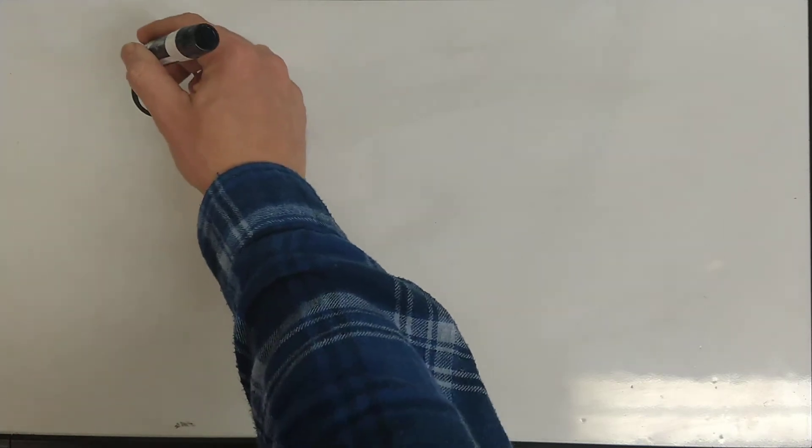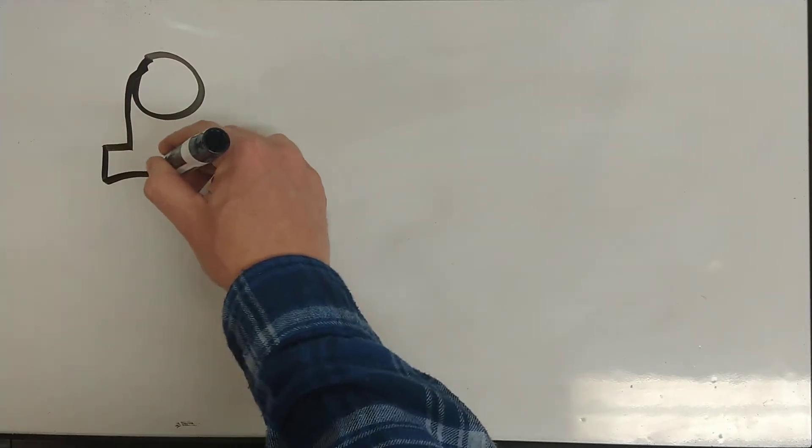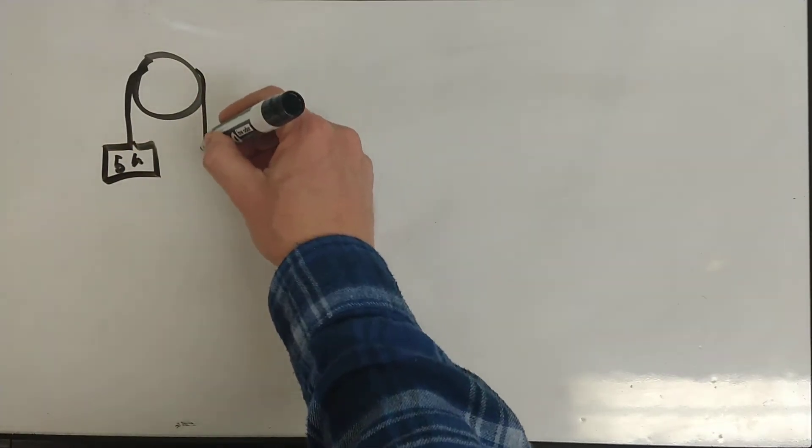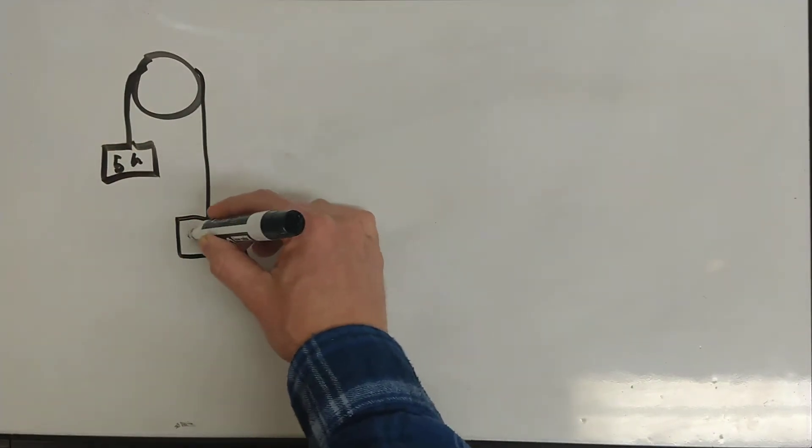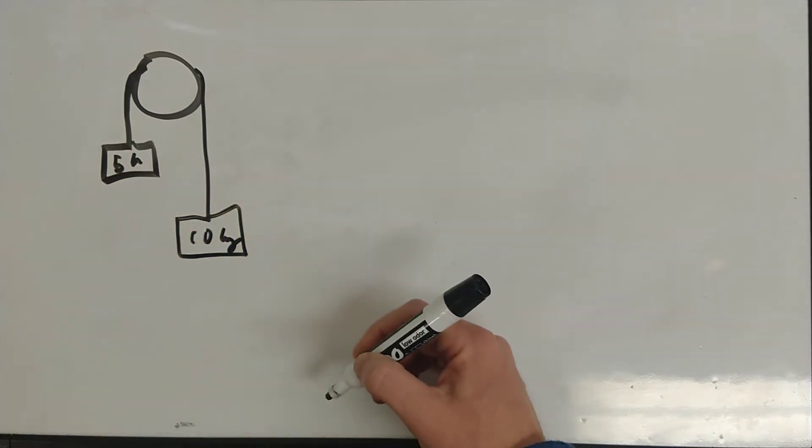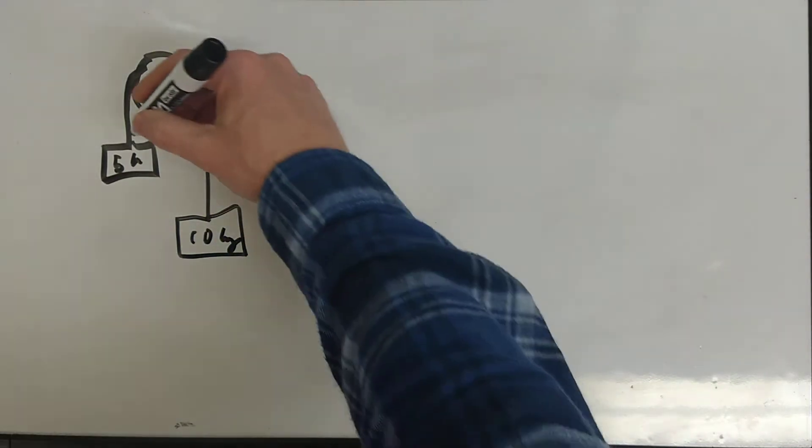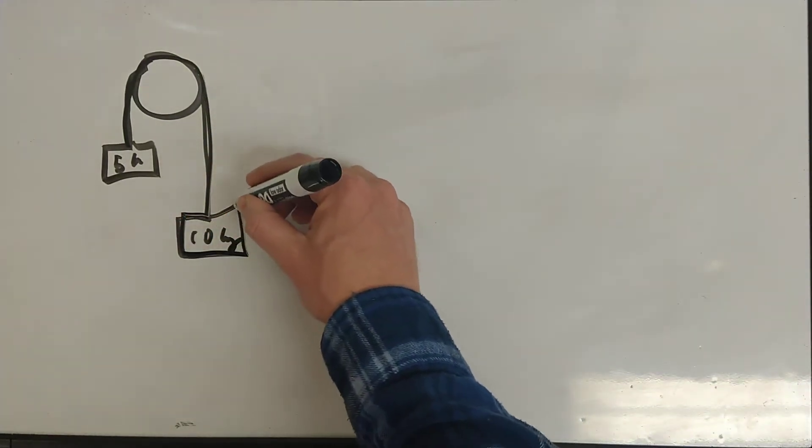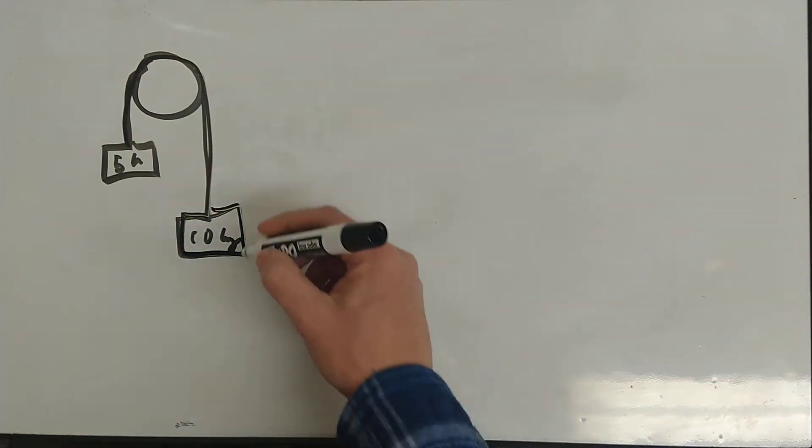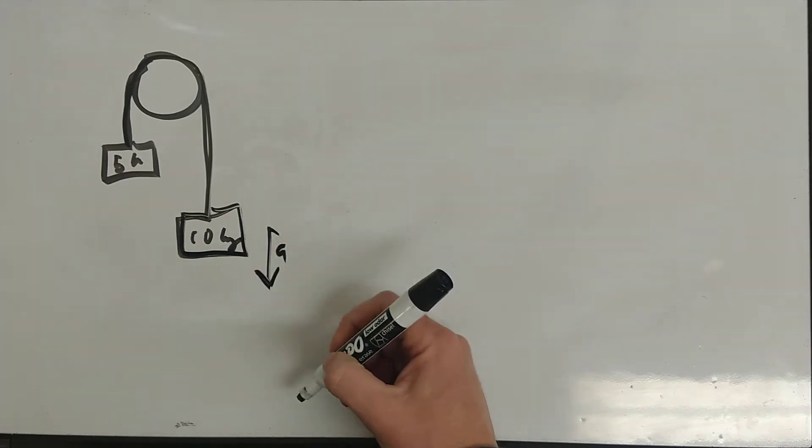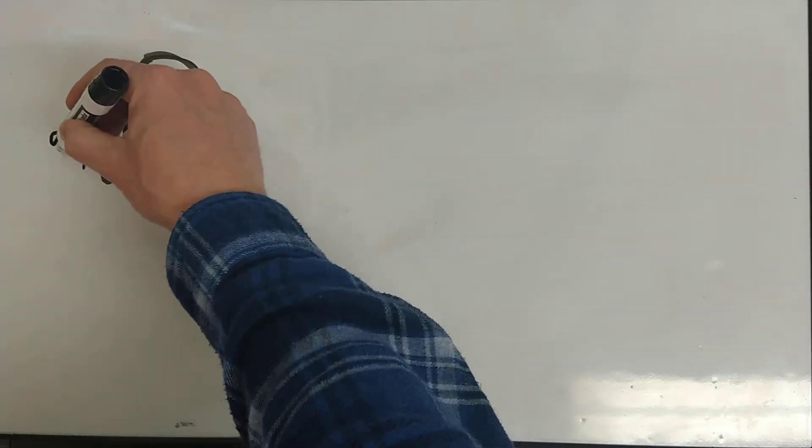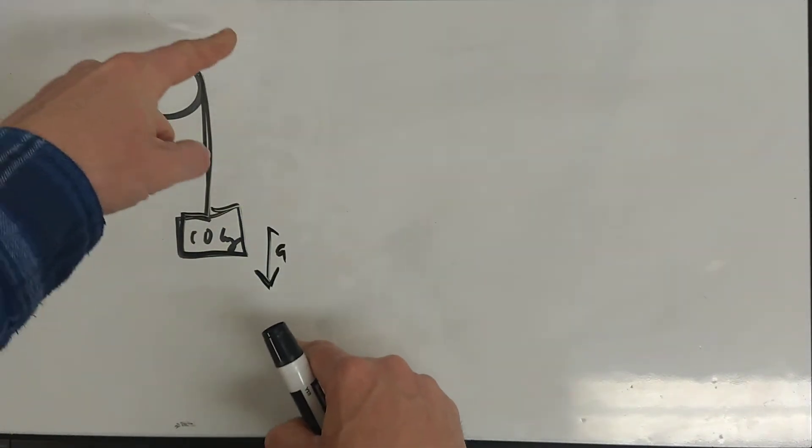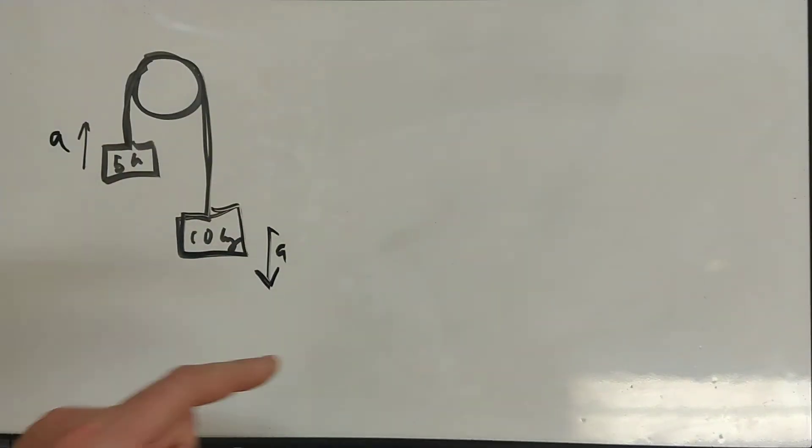That was the thing we always used to say. Okay, if we hung a 5 kilogram mass over here and a 10 kilogram mass over here, we let it go. Well, obviously it's going to go this way, and the 10 kilogram mass is going to fall down. It's going to accelerate this way. This one's going to accelerate that way. They're going to have the same magnitude of acceleration. This one's going to accelerate up, this one's going to accelerate down.